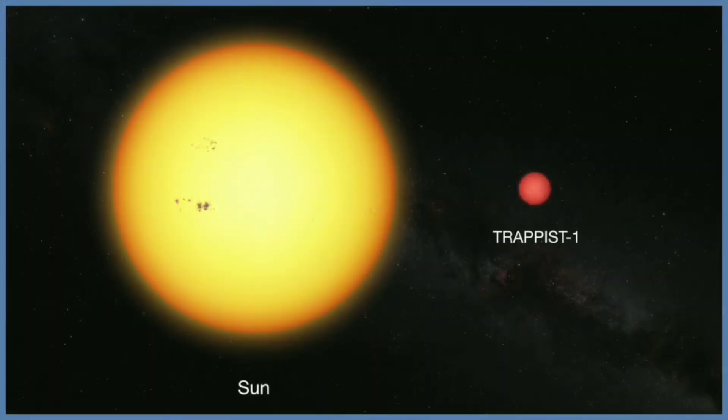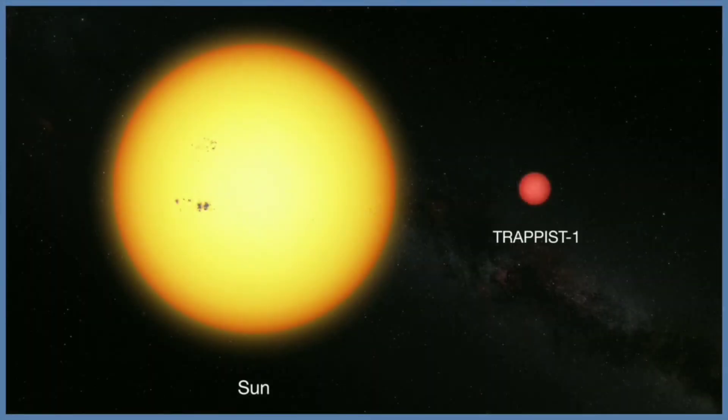In contrast to our sun, the TRAPPIST-1 star is classified as an ultra-cool dwarf, and the star is so cool that liquid water can survive on the planets that are orbiting very close to it.